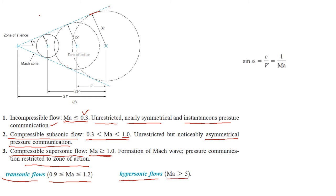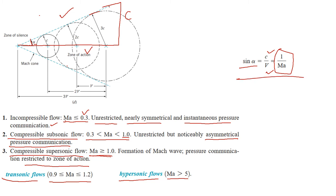If we apply trigonometry to the Mach cone, treating it as a triangle where the perpendicular is c (speed of sound) and the horizontal is V (speed of the object), then sine of the half-angle α equals c/V, which equals 1/M (one over the Mach number). This relationship is only applicable when the object's speed is greater than the speed of sound.